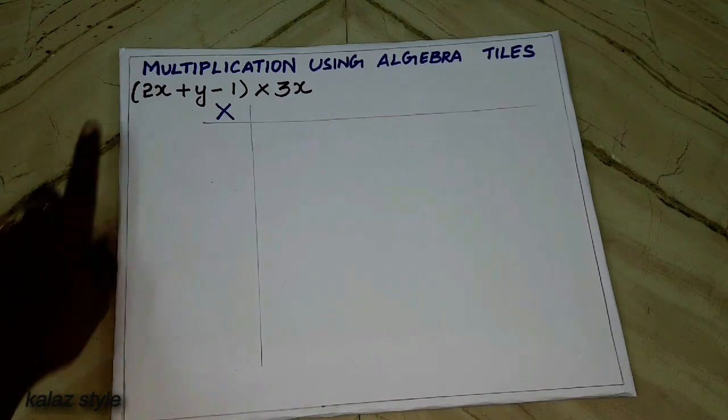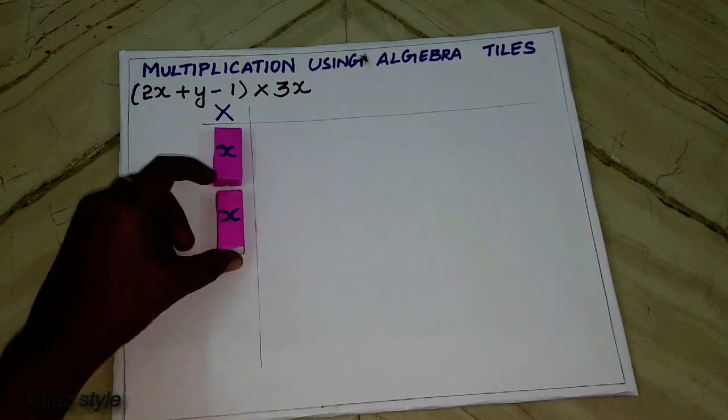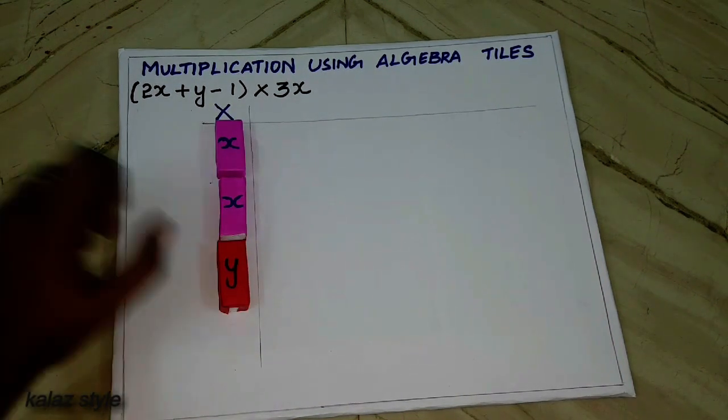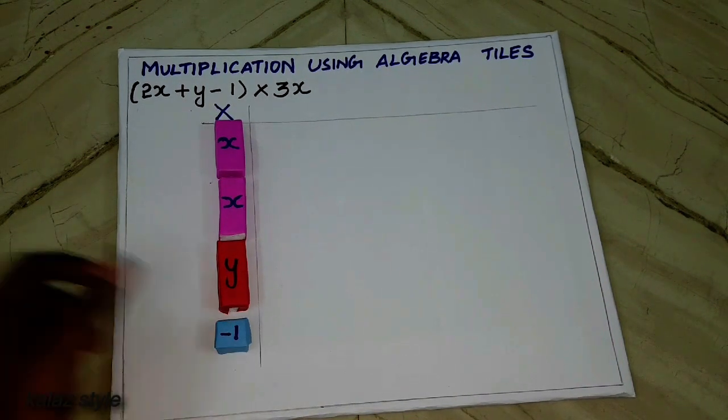For 2x plus y minus 1, I'm giving 2 times of x tiles, 1 y tile, and finally minus 1 tile.